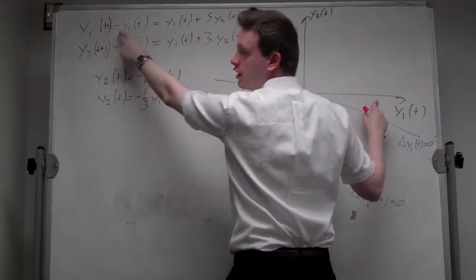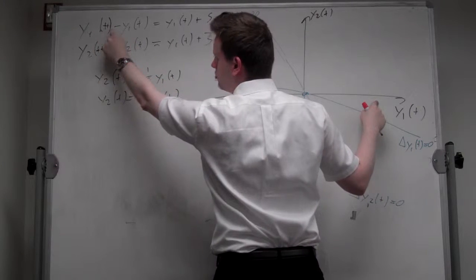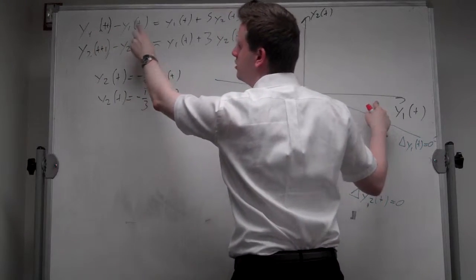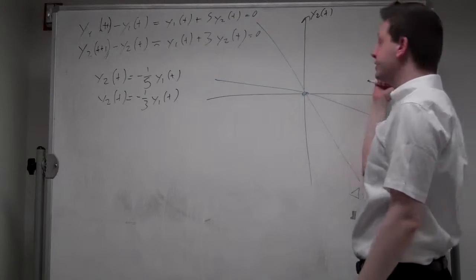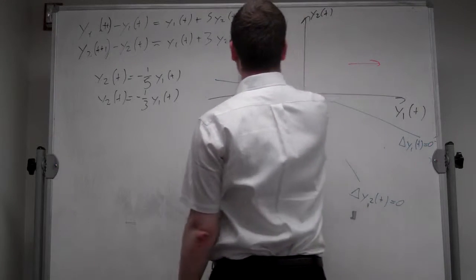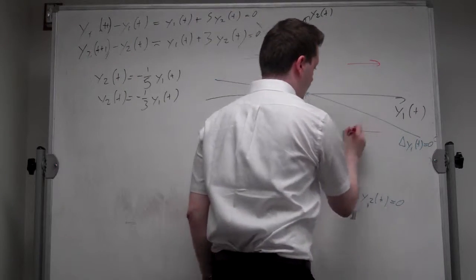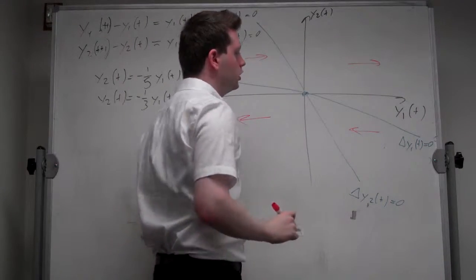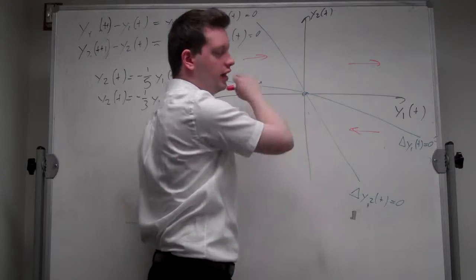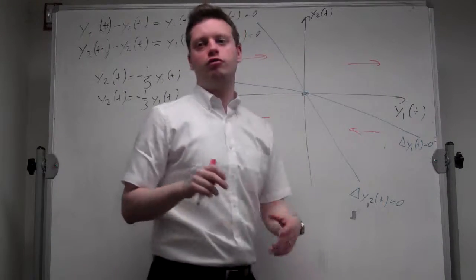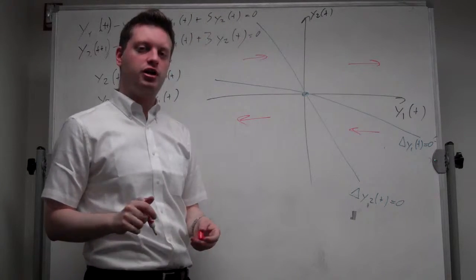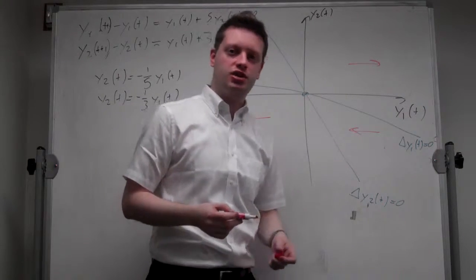And below the converse, we move to the left. Note that these two lines create four distinct areas, and for all four areas we need to determine which direction the dynamics go.